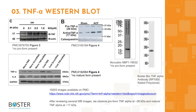Topic 3: TNF alpha in western blotting. Antibody specificity can make or break an experiment. After looking through western blot images from publications and antibody companies, we can see that typically two bands can be expected in a TNF alpha western blot: the proform TNF alpha at around 26 kilodaltons and the mature TNF alpha at around 17 kilodaltons. Check out the PMC link for more images, which is also provided in the description box.